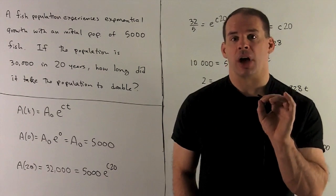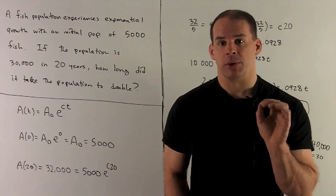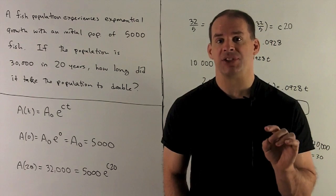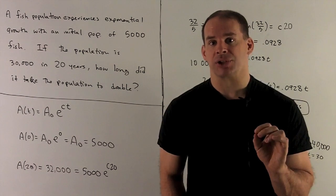So what do I have? First off, at t equals zero, we have 5,000 fish. If I put zero into my equation, I get A₀ e to the zero. E to the zero equals 1, so A₀ is 5,000.